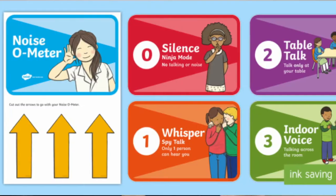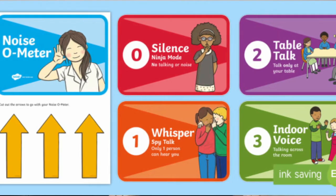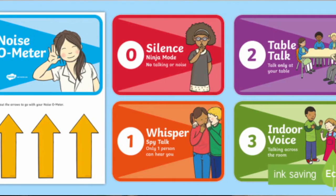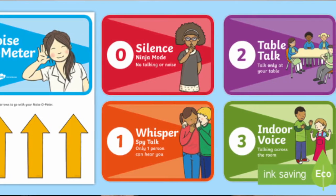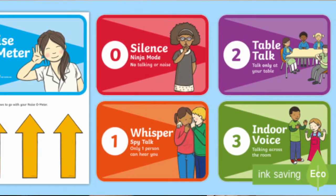My last suggestion is to use a noise-o-meter. A noise-o-meter acknowledges that there are times when it's okay to be noisy but there are also times when it isn't. Having a noise-o-meter displayed in your classroom will let students know at any given time what the noise level should be like. It also gives the teacher something they can draw attention to if the noise level is getting higher than they would like.